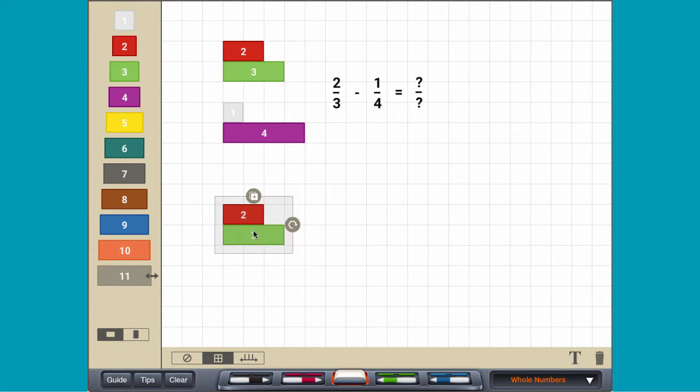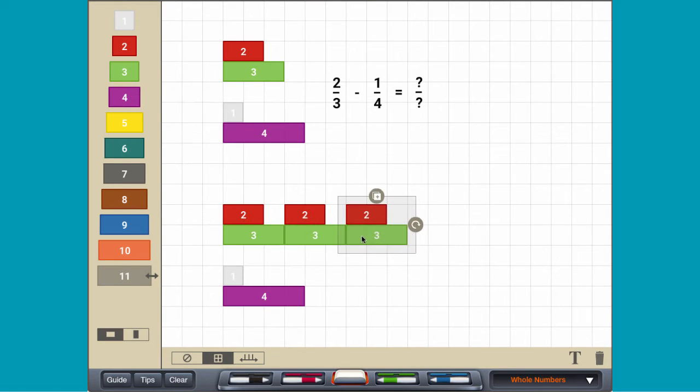To find a common denominator, create a train of three-unit rods and a train of four-unit rods until both are the same length.